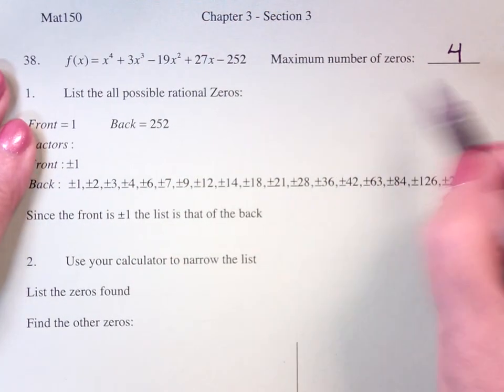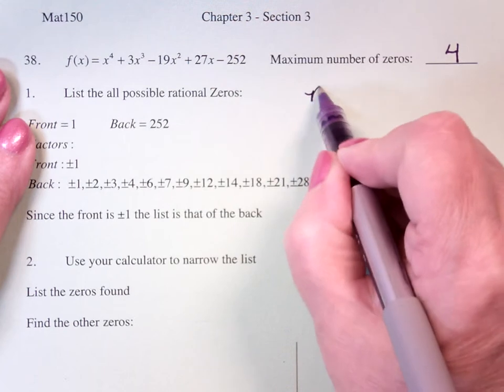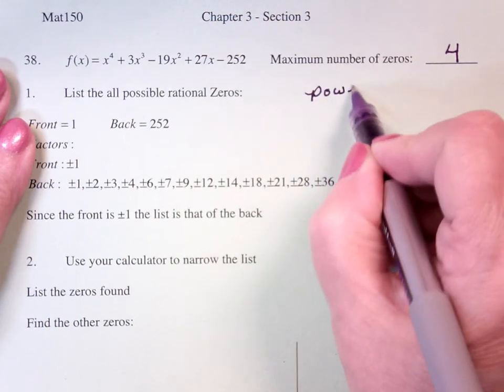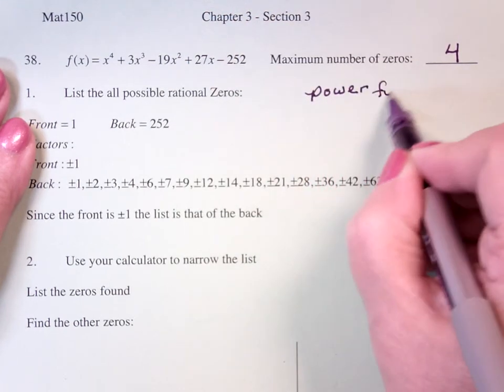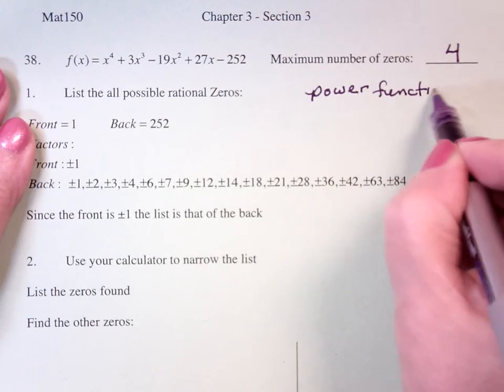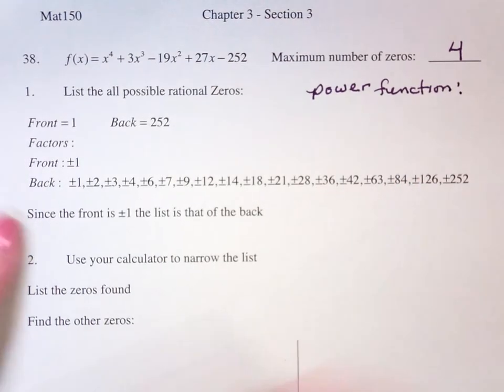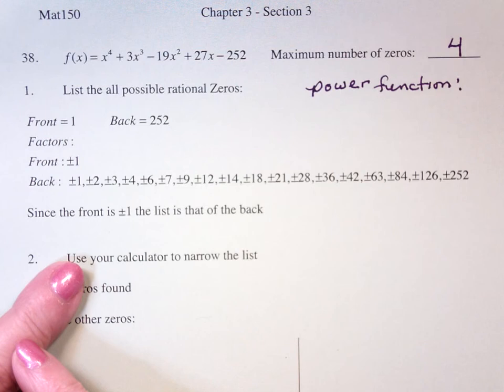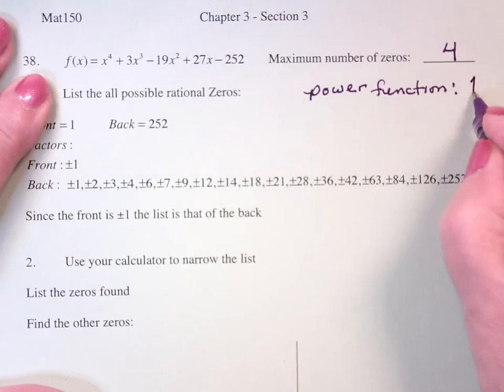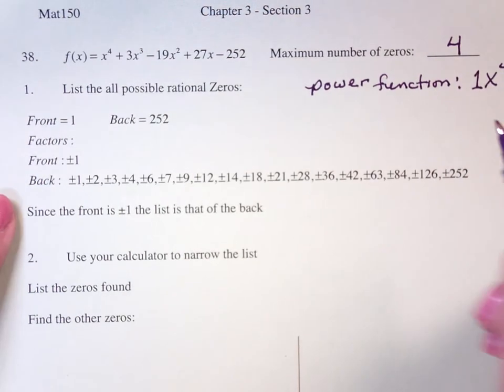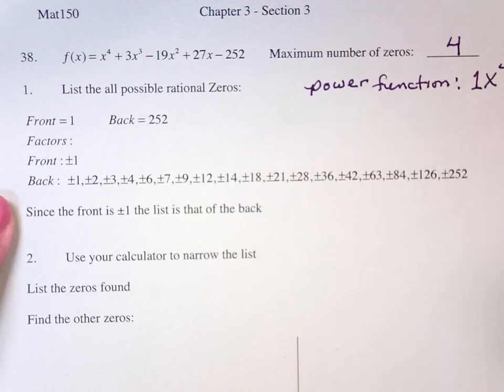Something that we haven't talked about that we're going to need for the next section is what is the power function? What's the power function in this instance? It's x to the fourth, yeah. It's 1x to the fourth. It's the highest powered term that appears, positive or negative.